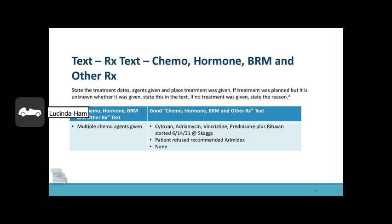In the text boxes for chemo, hormone, biological response modifier, and other treatment, state the treatment dates, agents given, and place the treatment was given. If the treatment was planned but is unknown whether it was given, state this in the text. If no treatment was given, state the reason. Look below for a good example of treatment text.